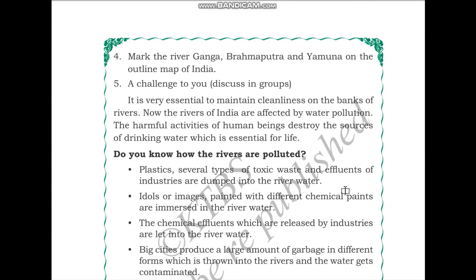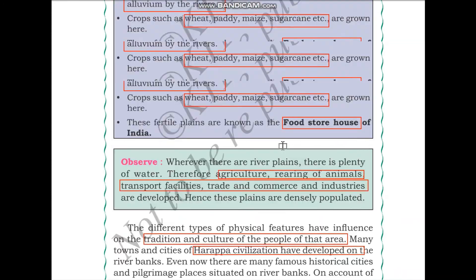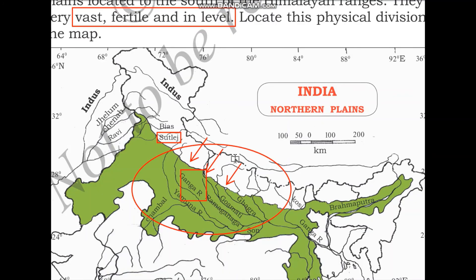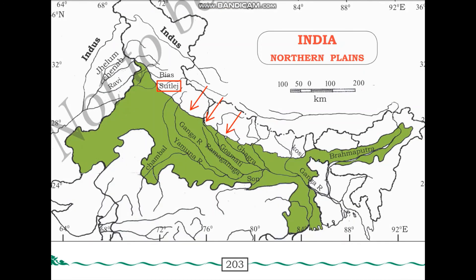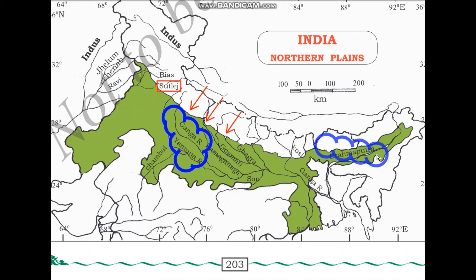Next question: mark the rivers Ganga, Brahmaputra, and Yamuna on the outline map of India. Going back to the map and zooming in, here we have the Ganga river, the Yamuna river just below it, and the Brahmaputra river located over here.